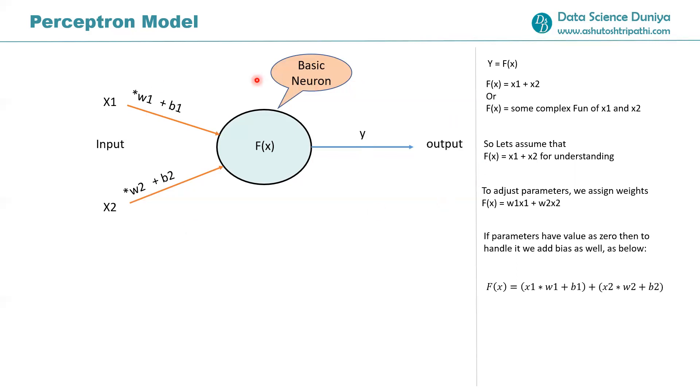So this is the whole working of this perceptron model. Now if we want to generalize it, suppose we have more features x1, x2, x3, x4 till xn. Then our generalized equation becomes f(x) equals sum from i equals 1 to n of (xi*wi + bi). You put the feature values here with their associated weights and bias terms, solve this equation, and you'll get the y value.